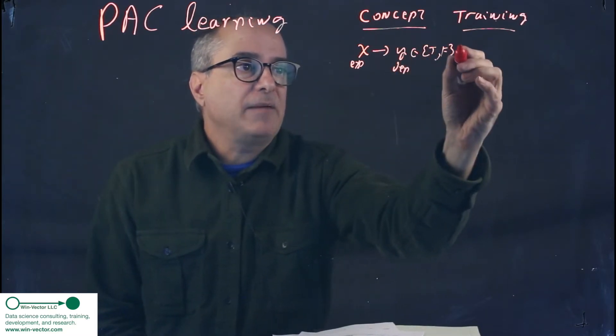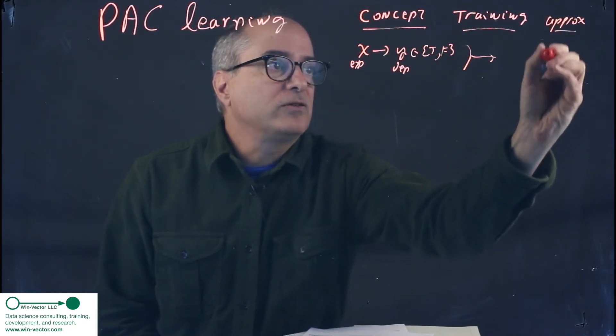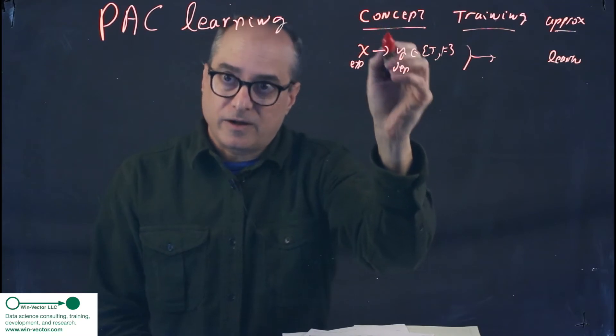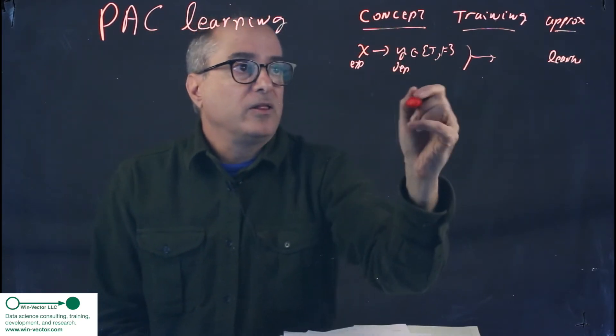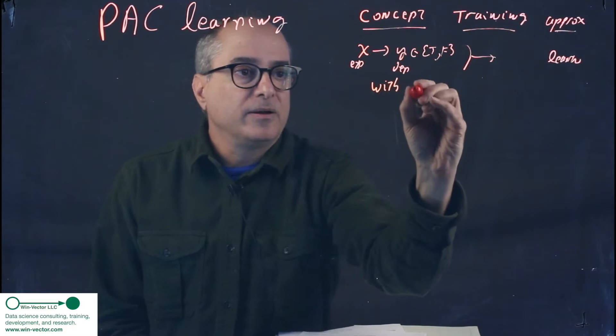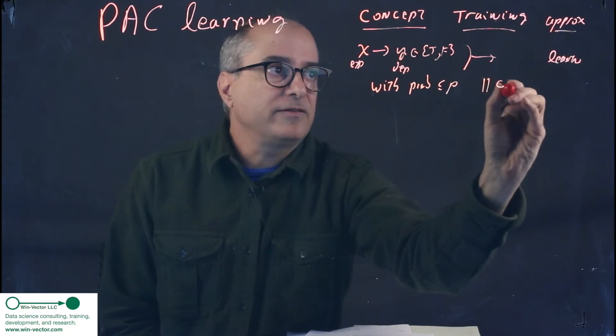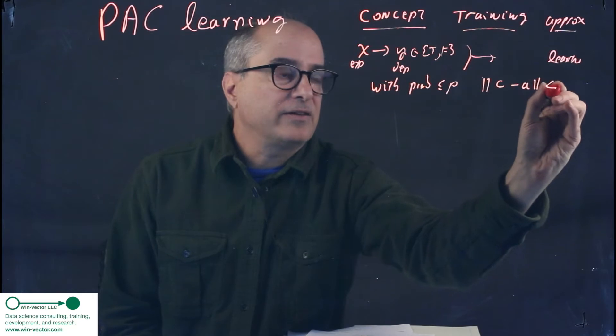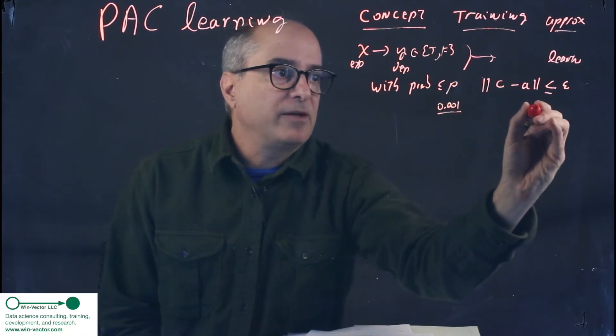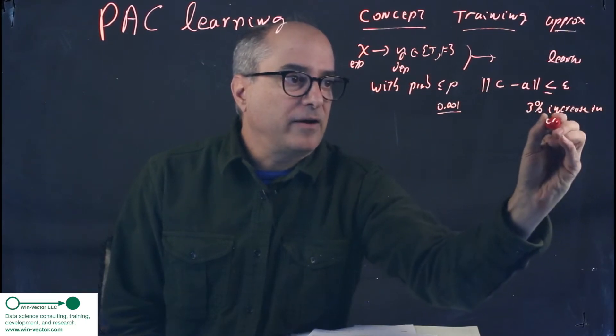Training tries to, by examining the data, find an approximation concept. Now what we want is the approximation we learn is very near the concept we were trying to learn that generated the data. So PAC says, with a low probability, with prob less than or equal to P, the distance of concept to approximate is less than or equal to epsilon. P might be 1 in 1,000th, and epsilon might be something like 3% increase in error rate.